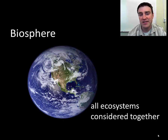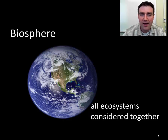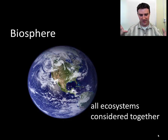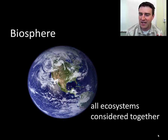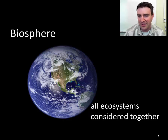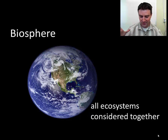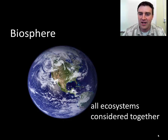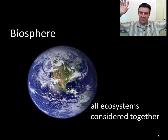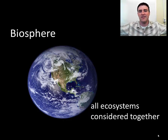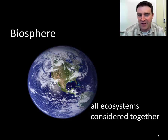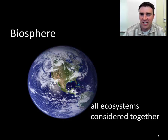Finally, the biosphere level encompasses all ecosystems considered together. We're now thinking about all areas, because some issues affect many ecosystems at once. For example, a volcanic eruption would affect the area directly around the volcano, but it also releases chemicals into the atmosphere that can impact ecosystems thousands of miles away. That would be a biosphere-level issue that ecologists might study.